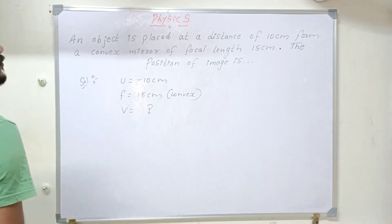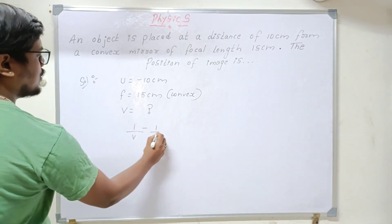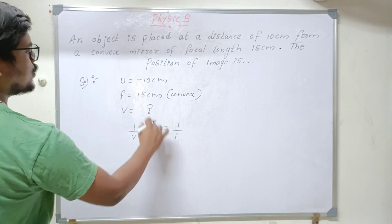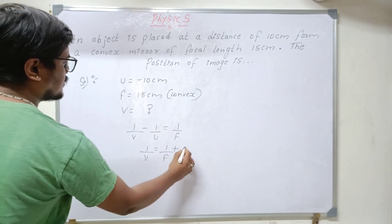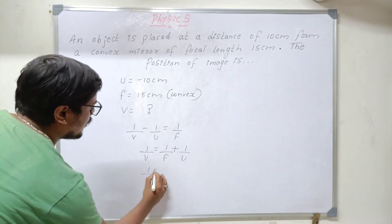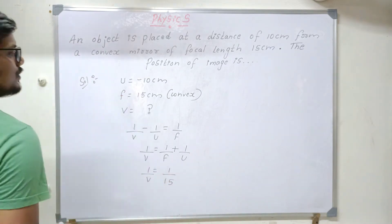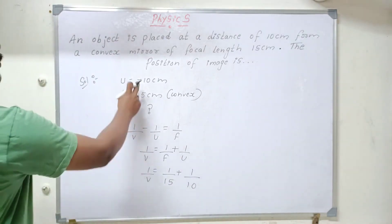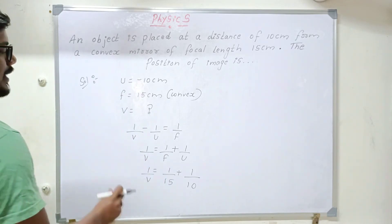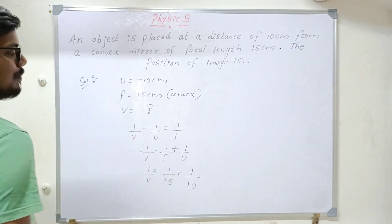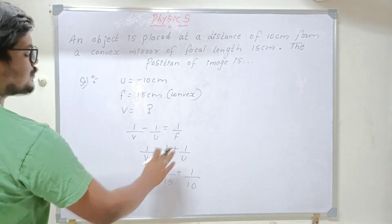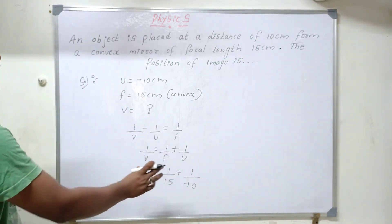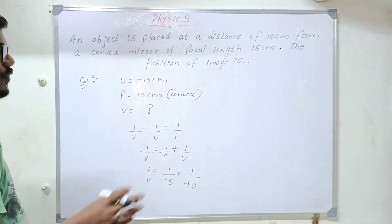So what is the mirror formula we have? 1 by V minus 1 by U equals 1 by F. I need to find V. Transpose the minus 1 by U towards the right hand side. 1 by V equals 1 by F plus 1 by U. Now 1 by V equals 1 by 15 plus 1 by 10. But what is U value here? U value is negative. I repeat again, 1 by V minus 1 by U equals 1 by F. 1 by V equals 1 by F plus 1 by U. 1 by V equals 1 by 15 plus U value is negative. Here you will be doing mistake, you will not write the negative sign. Negative sign you have to write children, don't forget.